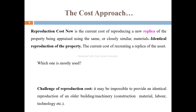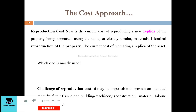Reproduction cost is the cost to build and reproduce the asset in an identical manner — specifically identical to the original. Equipment that is replaced is reproduced using specifically identical materials and methods to the original construction, making it identical in reproduction cost terms.